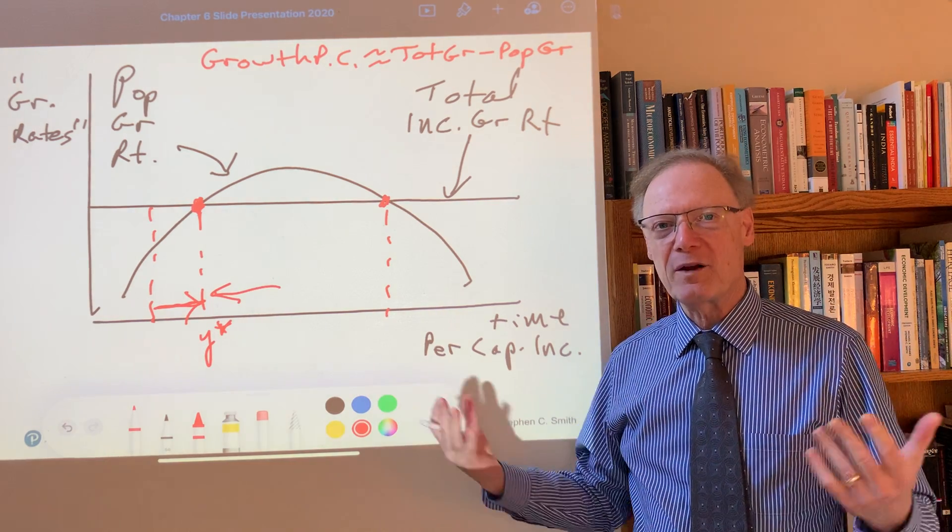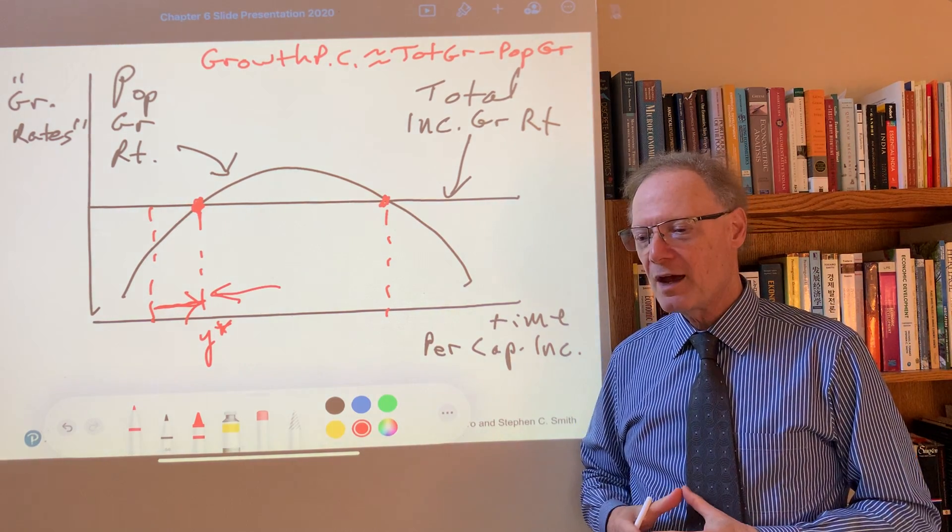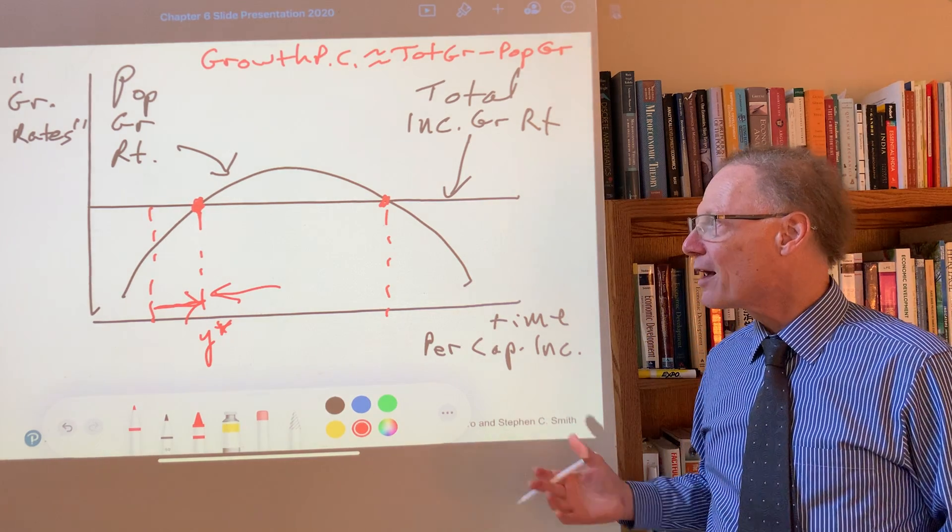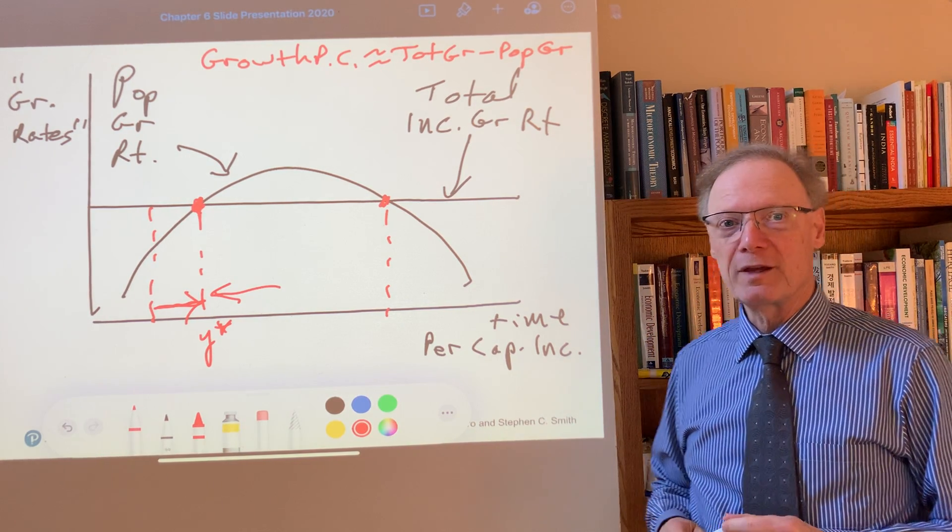So this would be the idea, anyway, that at least for some indefinite period per capita income, as we measure it, could continue to grow. So those actually are the two possible equilibria.